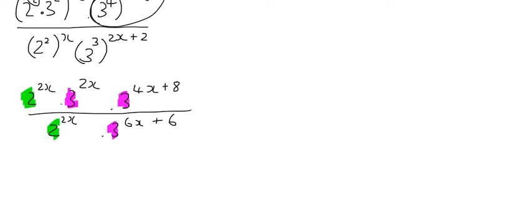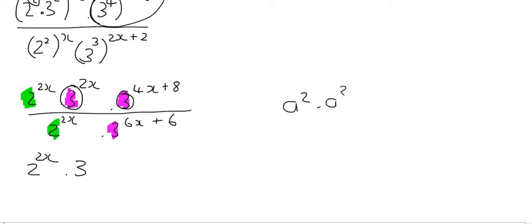Once we see the similarities, we can combine them using exponent rules. At the top, we put those 3s together first. We're stuck with 2 to the power of 2x at the top and then 3 to the power of... The exponent rule says when your bases are the same and you're multiplying, you add the exponents. So that becomes 3 to the power of 6x plus 8, because 4x and 2x becomes 6x. At the bottom, we write it exactly as is because the 2 and the 3 cannot be combined.